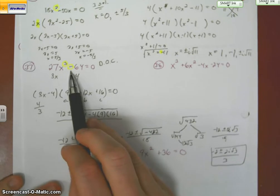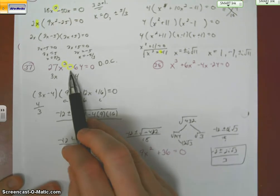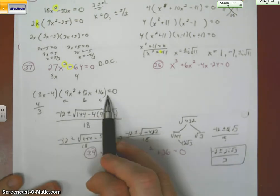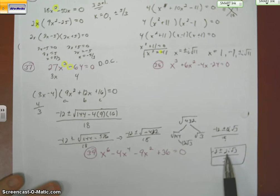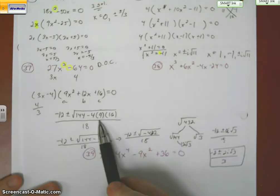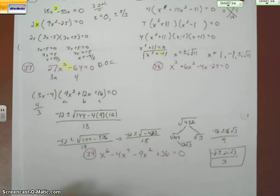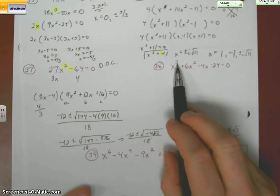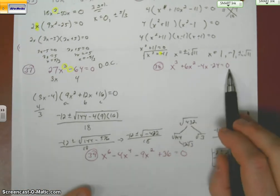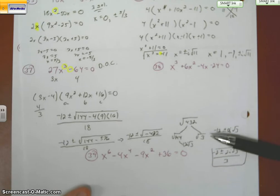I'm going to tell you right now, whenever you have to do difference of cubes or sum of cubes, this trinomial is always going to end up with an i. And it's also going to have to be quadratic formulaed out to get your roots. Next one. I have a degree of 3. Set equal to 0. I'm good to go. I'm looking for 3 solutions.